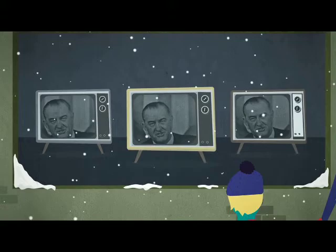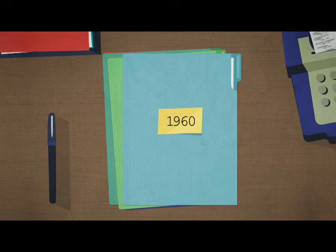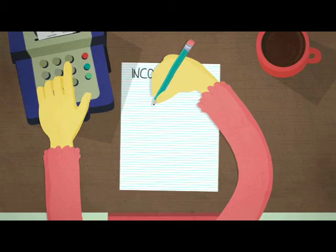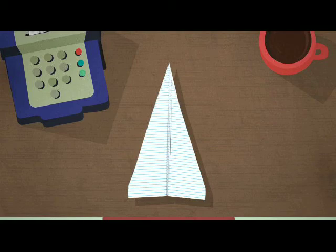Enter Molly Orshansky, a government statistician who developed a simple way to measure poverty. In the early 60s, the average family spent about a third of their income on food. So Orshansky calculated the cost of feeding that family using the cheapest government food plan. Then she did some simple math. Since the Census Bureau needed a yardstick, Orshansky's method was pressed into service as the official poverty measure.